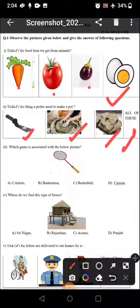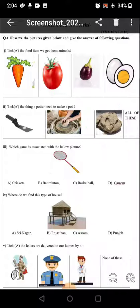Which game is associated with the below picture? Badminton is associated with this racket. Where do we find this type of house? We find this type of house in Assam. We find stilt houses made up of bamboos so that rain water does not enter the house.